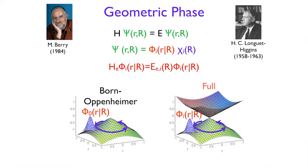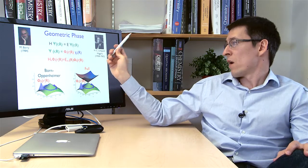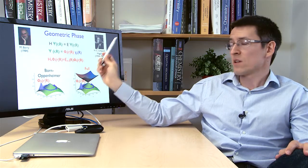Let's consider some historical background. In 1960, Longuet-Higgins, and later in 1980, Michael Berry generalized some of the ideas Longuet-Higgins found for molecular systems to more general physical systems.